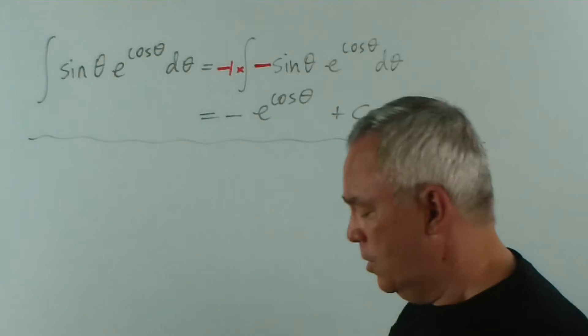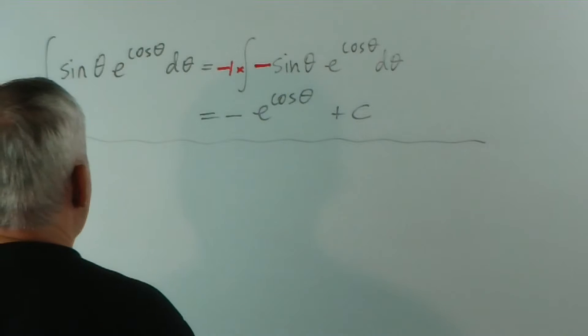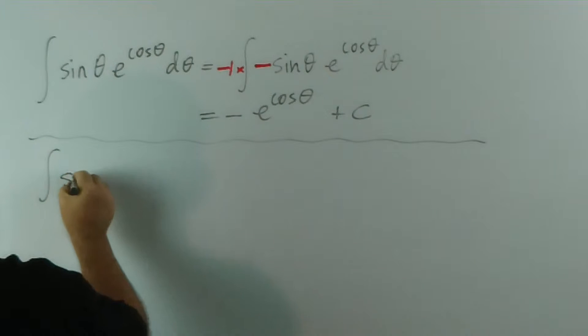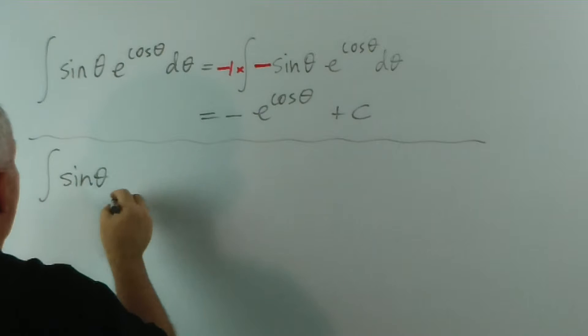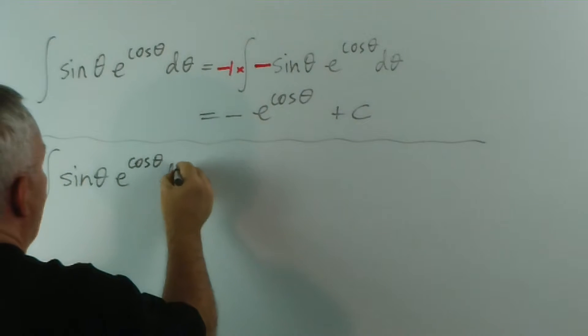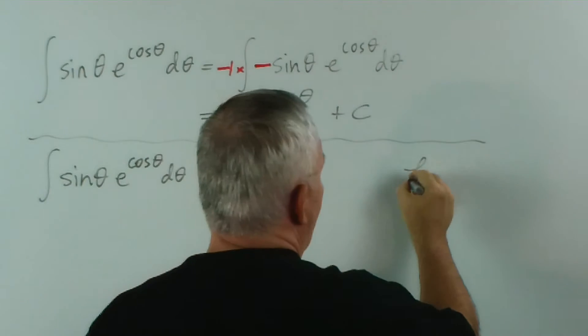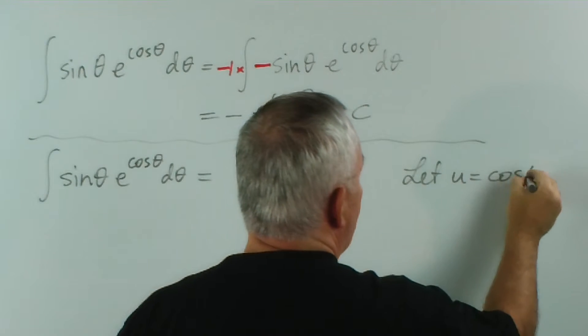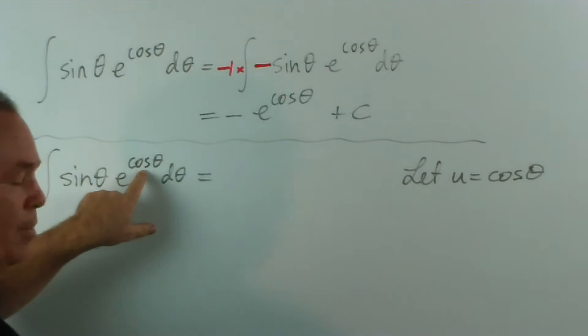But nonetheless, I've used it. The other method, of course, would be to substitute. I think I'll do this quite quickly because if you've already learned integration and you're doing this for revision, this should be pretty straightforward to you. So we let u equal cos theta because that's the function sitting up here.